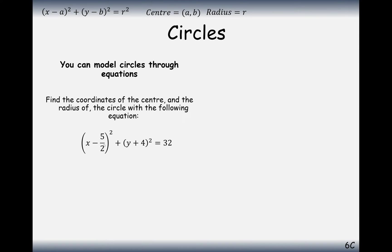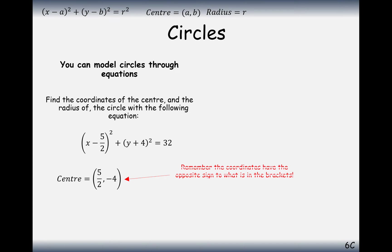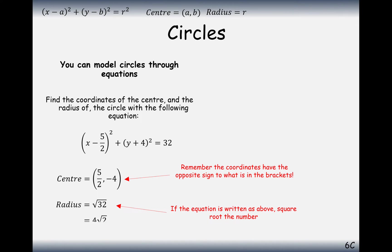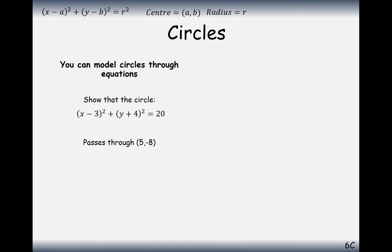What about this slightly more difficult one? The center in this case is the negative of −5/2, and the negative of 4, so that's minus 4. The radius is the square root of 32, so we always square root the number at the end — which simplifies to 4 root 2.